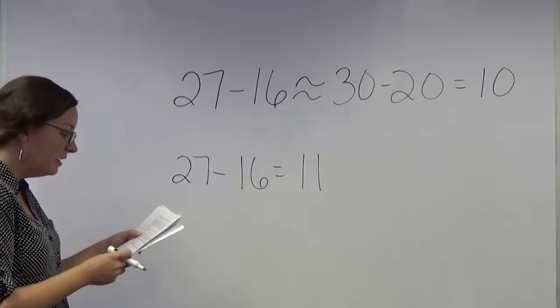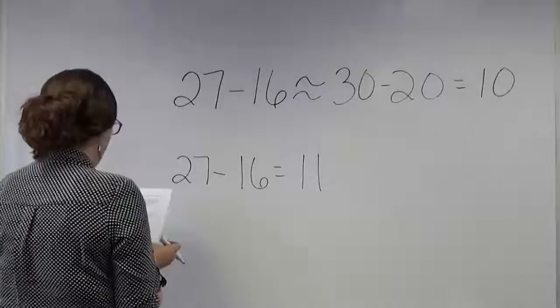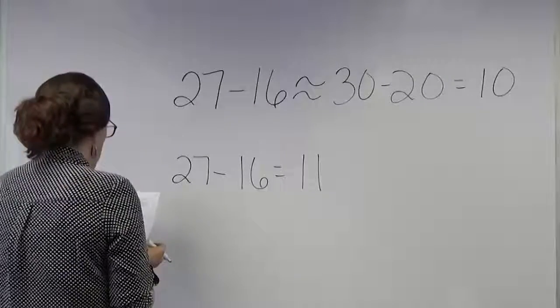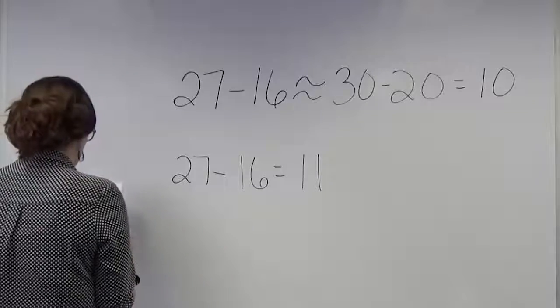Estimation gives us an idea of what our actual answer will be. We round each number first and then we add or subtract the rounded numbers. Then we use that estimation to help us check to see if our actual calculations are correct.